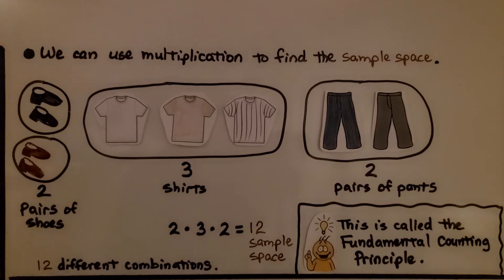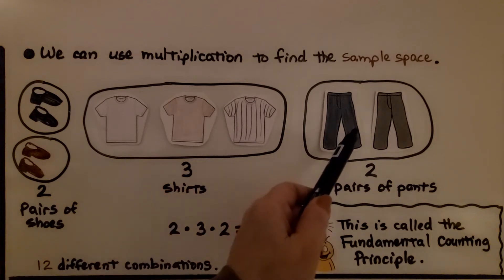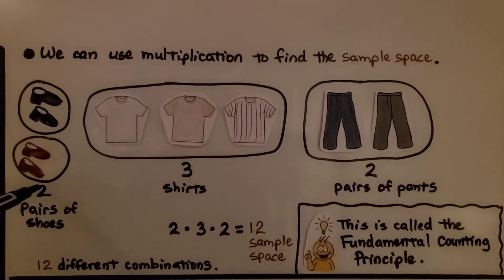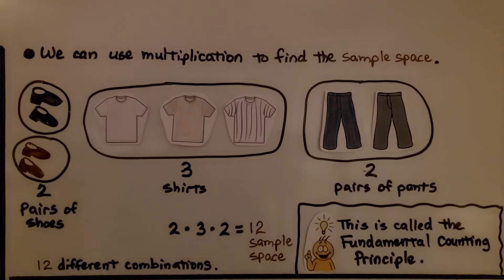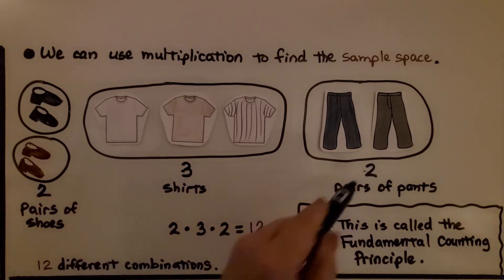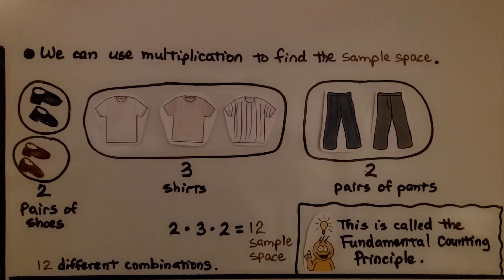Aside from making a tree diagram, we can use multiplication to find the sample space for Bob's outfits. He has two pairs of shoes, three shirts, and two pairs of pants. We multiply 2 times 3 times 2: 2 times 3 is 6, and 6 times 2 is 12 — the same sample space we found with the tree diagram, giving 12 different outfit combinations. Multiplying the number of choices this way is called the fundamental counting principle, which you'll explore more in Algebra 1 and Algebra 2.